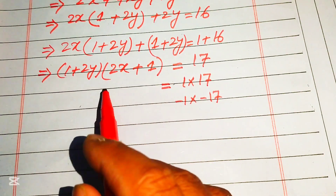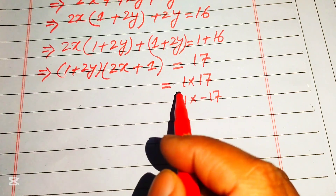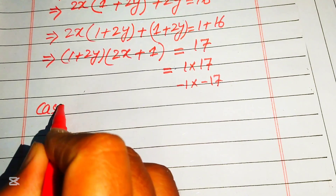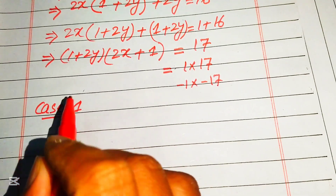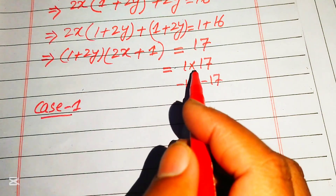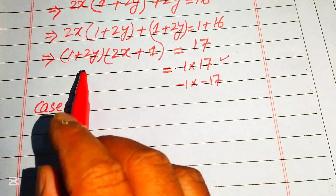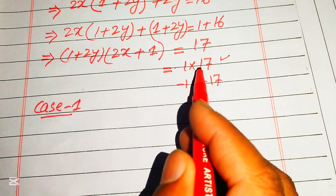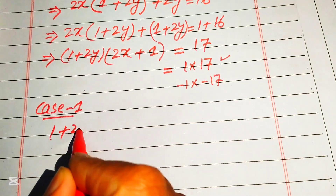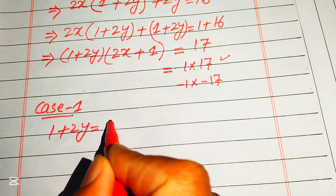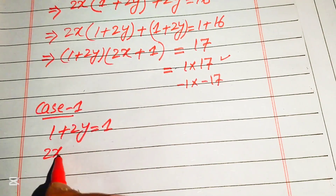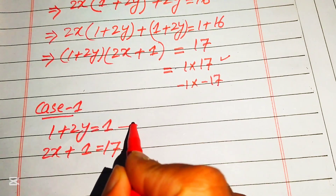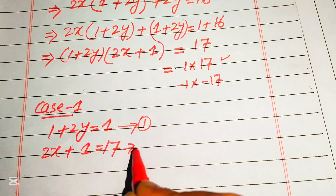We convert this into two cases. In Case 1, we compare the factors with the first option: 1 plus 2y equals 1 (equation 1), and 2x plus 1 equals 17 (equation 2).